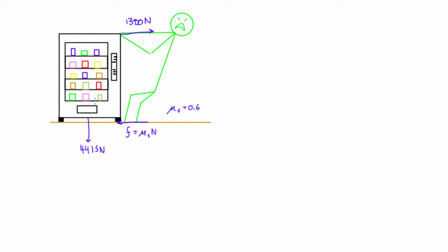The interesting thing about tipping problems is that when an object like this vending machine is on the verge of tipping over, it will still be in equilibrium — it hasn't tipped yet. There will be no reaction on the left side foot. When it's on the verge of tipping, that foot is almost about to lift off the ground, and all the weight basically transfers into the right-hand side to oppose the tip.